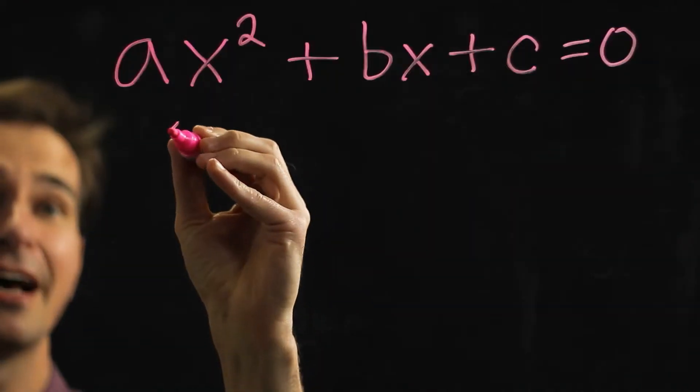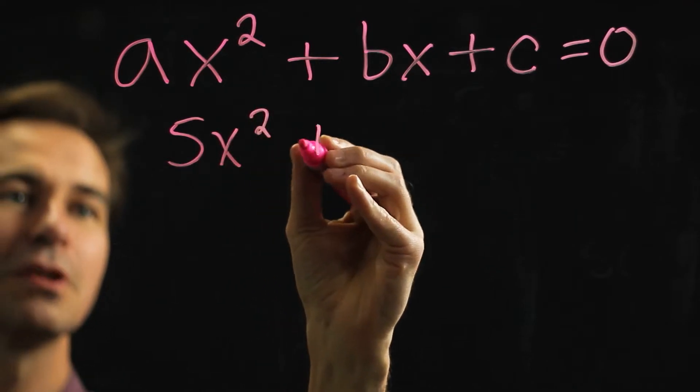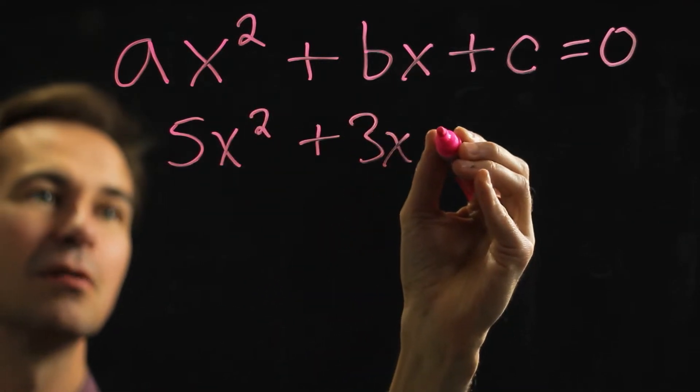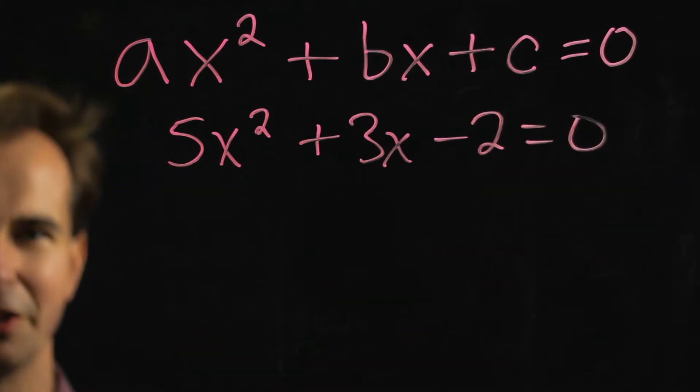For example, suppose we had 5x squared plus 3x minus 2 equals zero, and we wanted to figure that out.